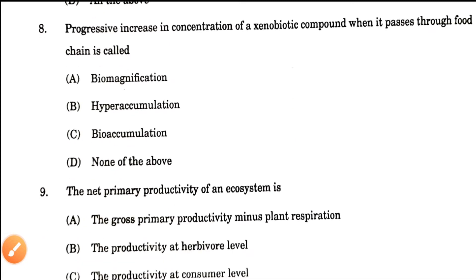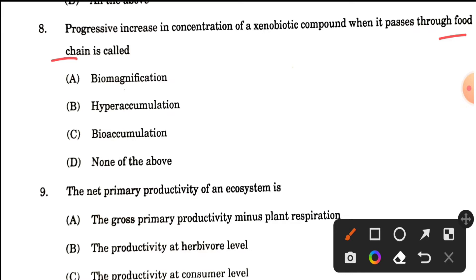Question number 8: Progressive increase in concentration of a xenobiotic compound when it passes through a food chain is called — biomagnification, hyperaccumulation, bioaccumulation, or none of the above? The answer is biomagnification, option A. Bioaccumulation takes place in a single organism over the span of its life, resulting in higher concentration in older individuals — that is different from biomagnification.